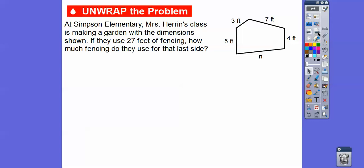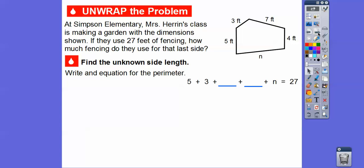Okay, so we're going to go ahead and find the unknown side here and write an equation. So we'll just go ahead, and we know the equation adds up to 27 right here. So if we just go ahead and add 5 plus 3, we'll go ahead and put in those blank spots, plus 7 plus 4, plus this N, so the 7 and the 4 are going to go right there. And then that's going to equal the 27, the 27 feet of fencing.